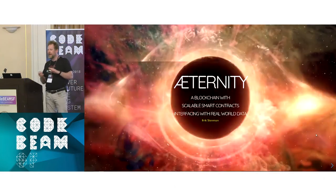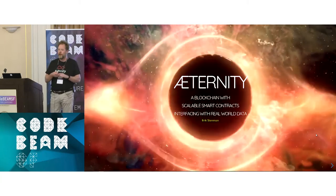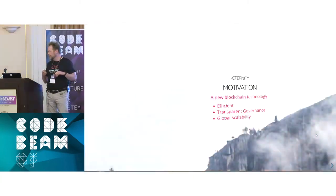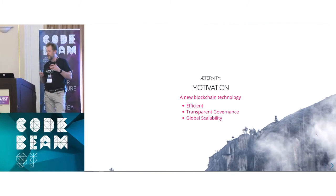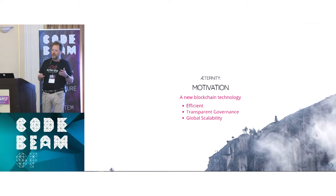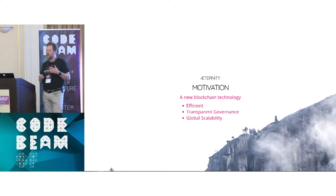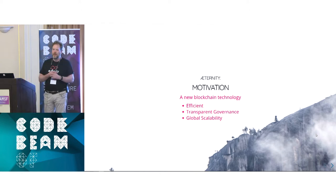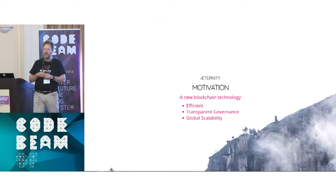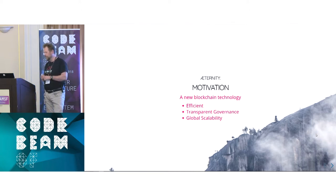Currently I'm working for a company called Eternity, and we're building a new blockchain with the goal of being sort of generation three of blockchain. We had Bitcoin first that paved the way, then Ethereum came along with smart contracts and a lot of new interesting features. The goal now is to come up with the next generation of blockchain after Ethereum.